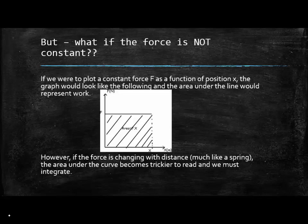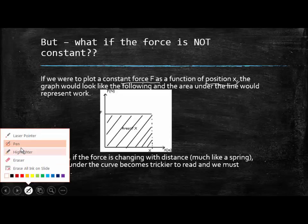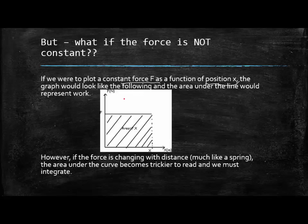Okay, so the last little bullet point we wanted to talk about today was what do we do if the force is not constant? So let's look at a graph for a situation where it is. So if we were to plot a constant force F as a function of the position, the graph would probably look something like this. This represents a constant force here, which would mean that the area for this graph would be F times x, which equals our work. So the area under this line would tell us what the work done on the object would be.